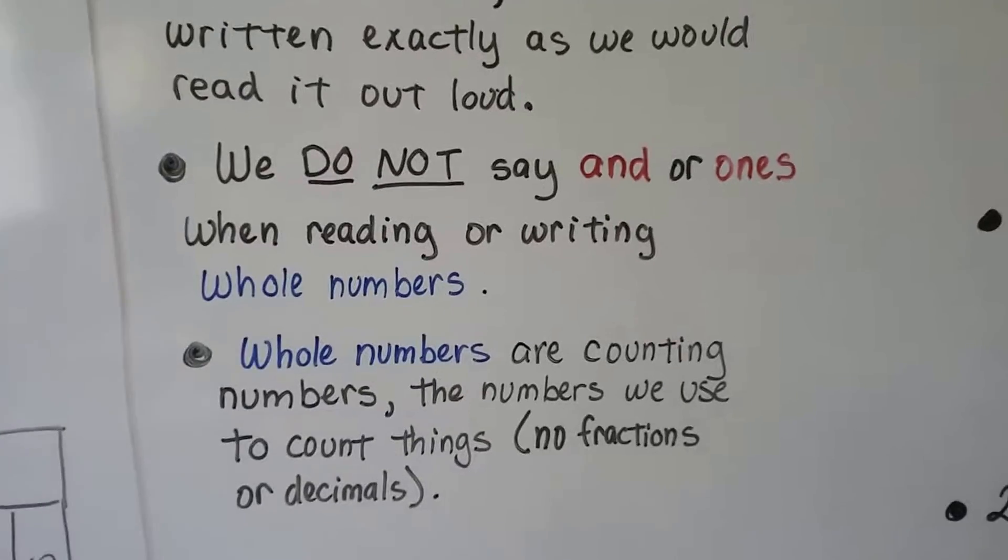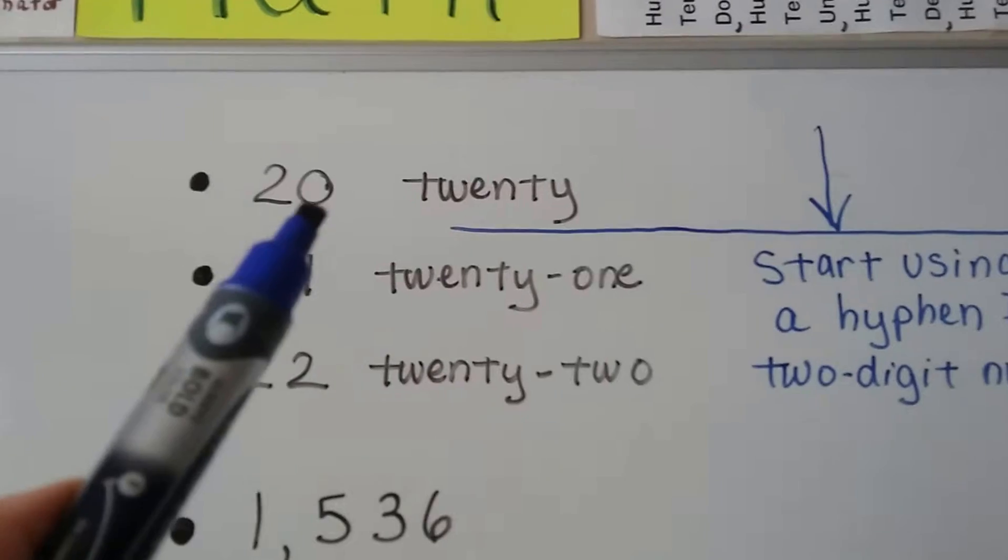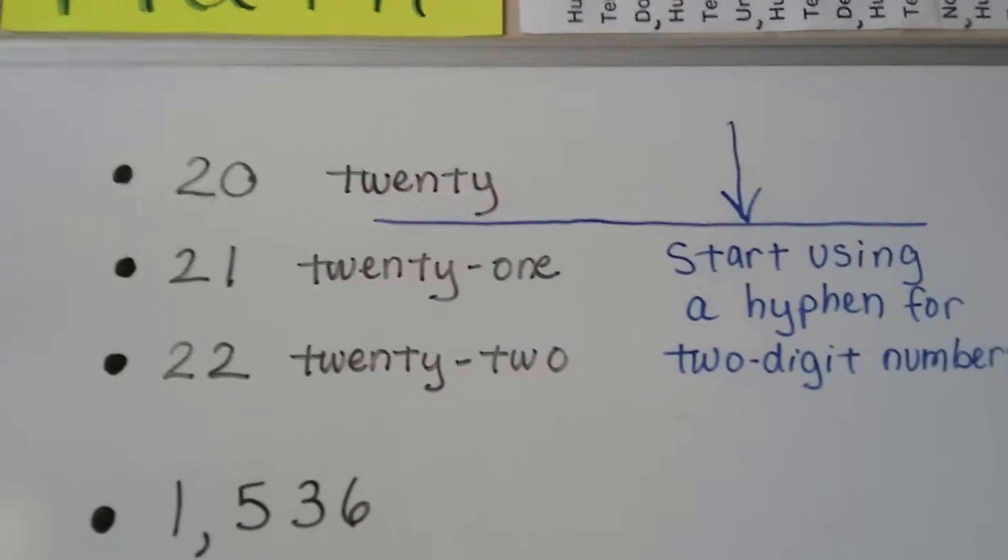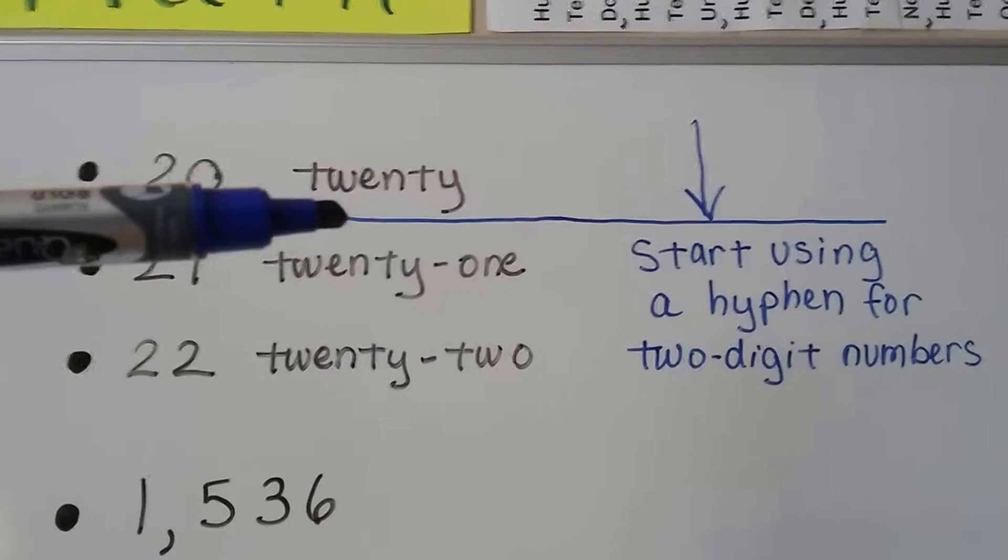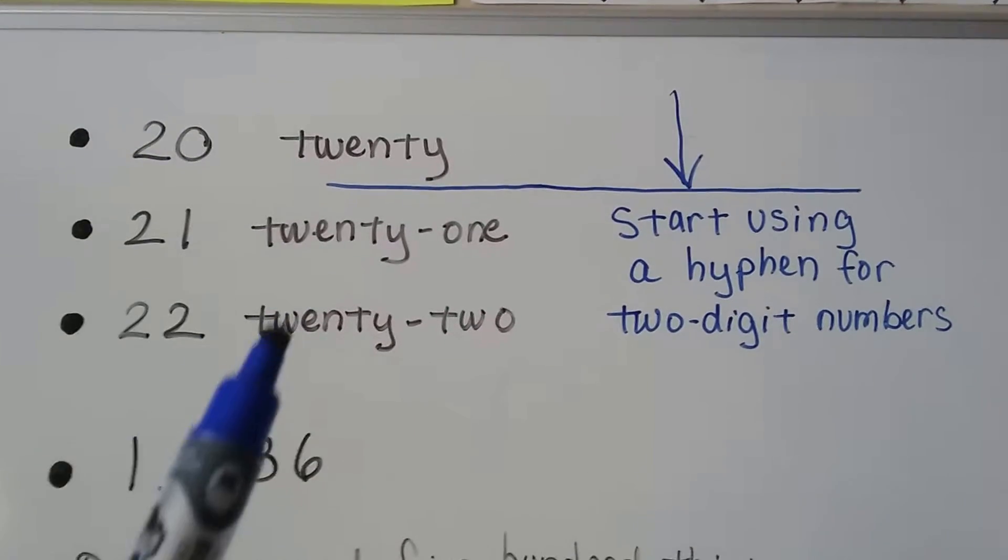So remember, we don't say and. When we have the number 20, we just write a two-zero or the word 20. But as soon as we pass that and we get to this point, we start using a hyphen for two-digit numbers.